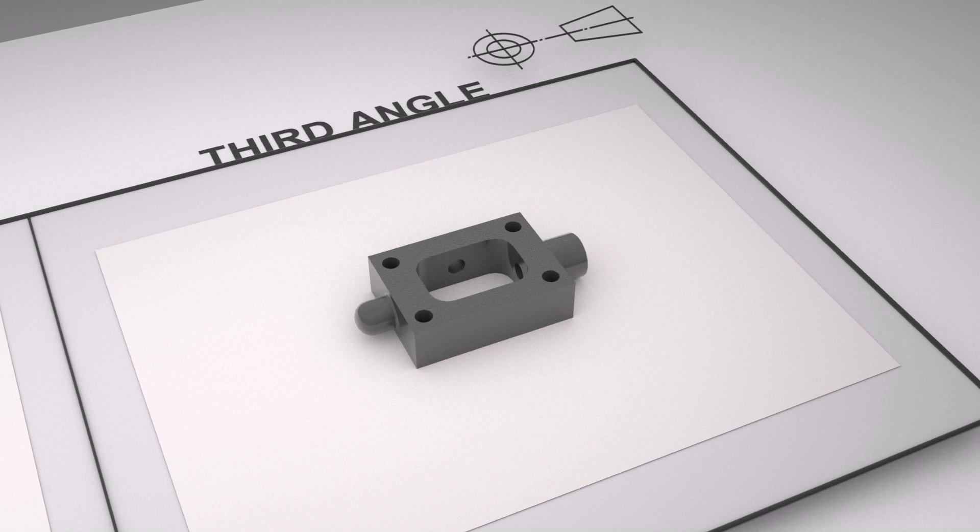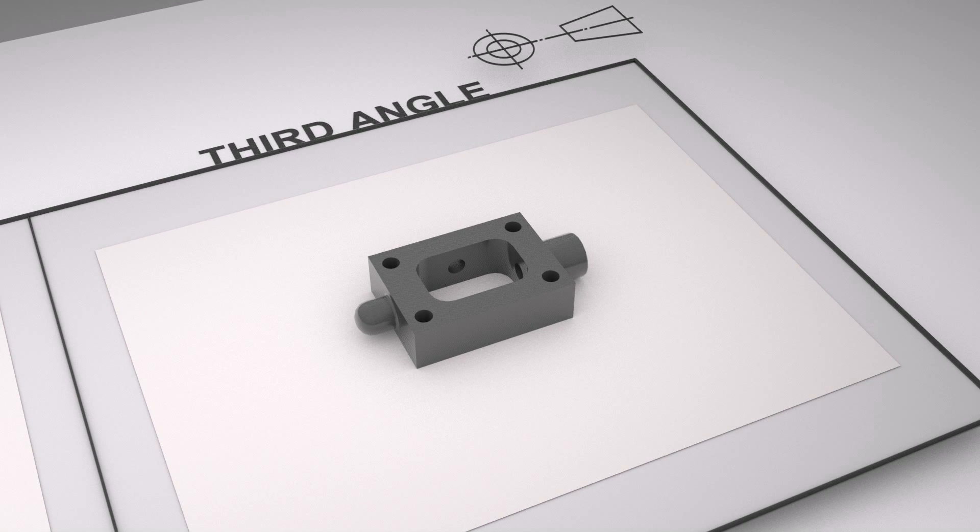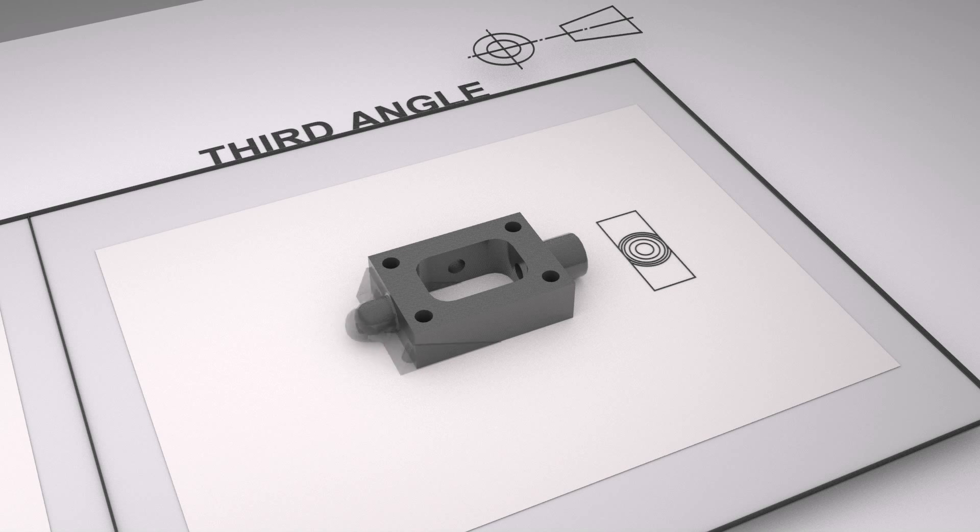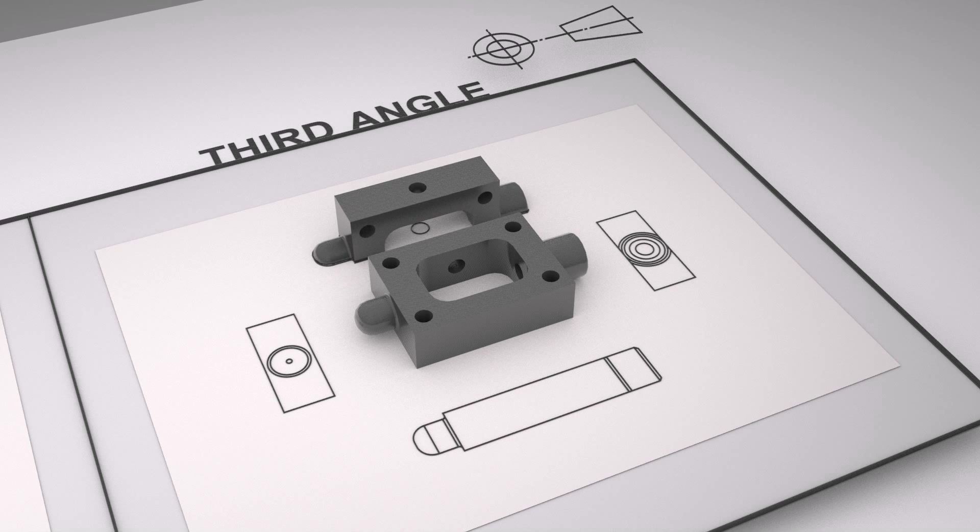Okay so moving on to third angle, again we're going to use that exact same front view and using that cardboard box thought pattern I explained in the last video you can quite easily see that what we're going to do is we're going to pull out the nearest side to the view we want to create by 90 degrees until it faces us and again just from the top down looking down what do we see, that's what we draw.